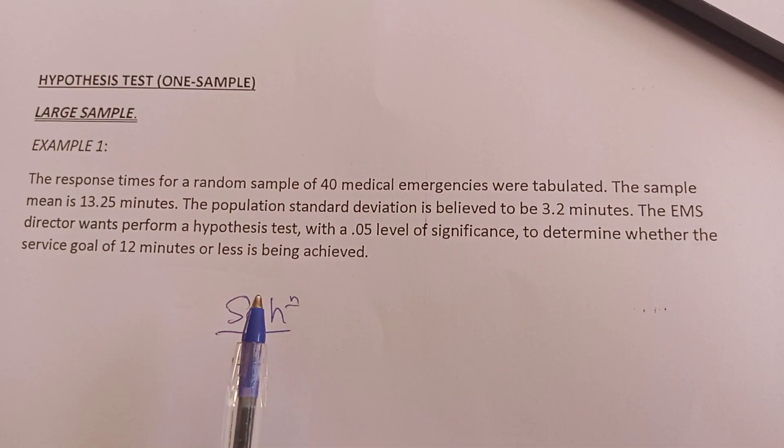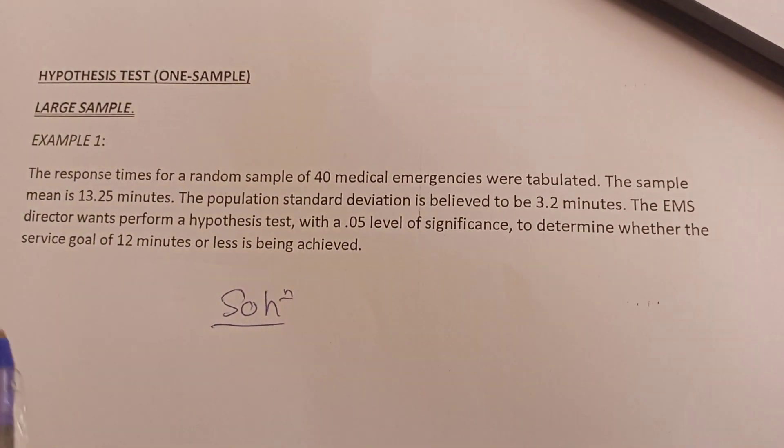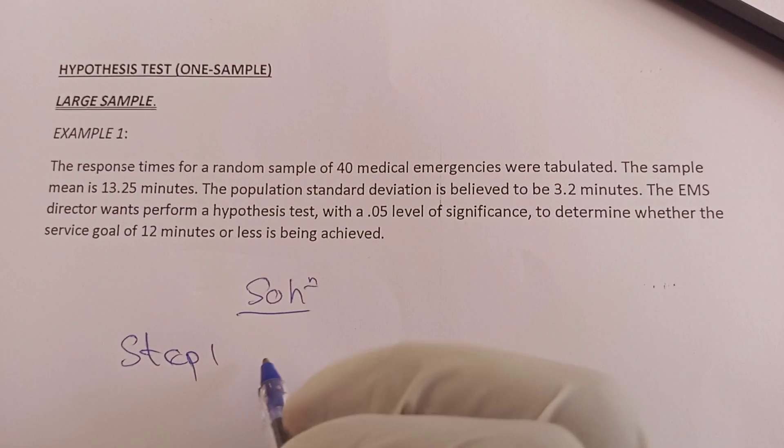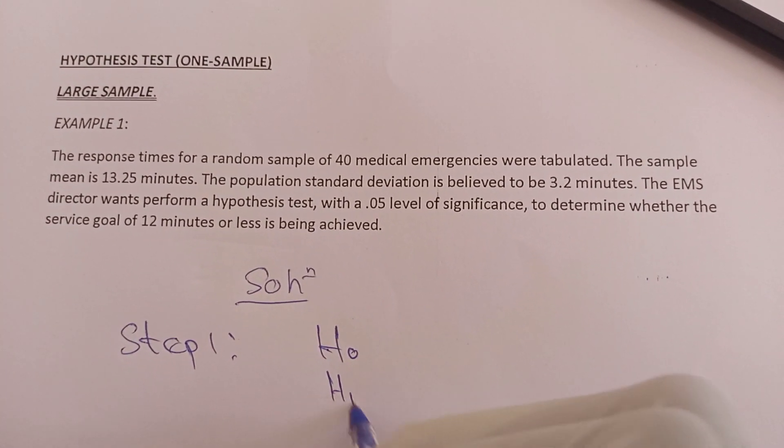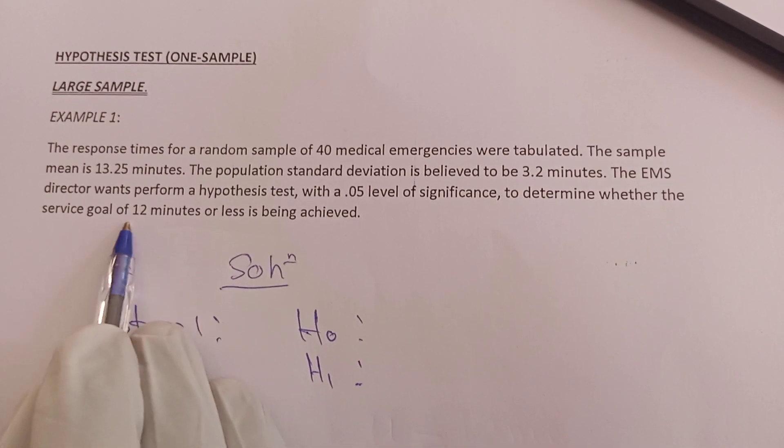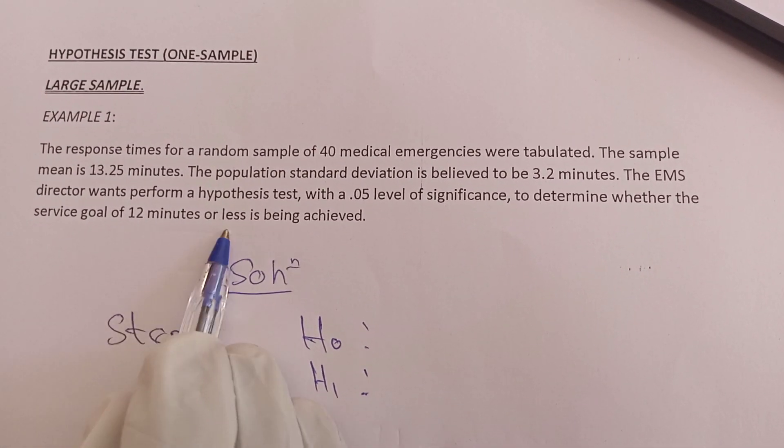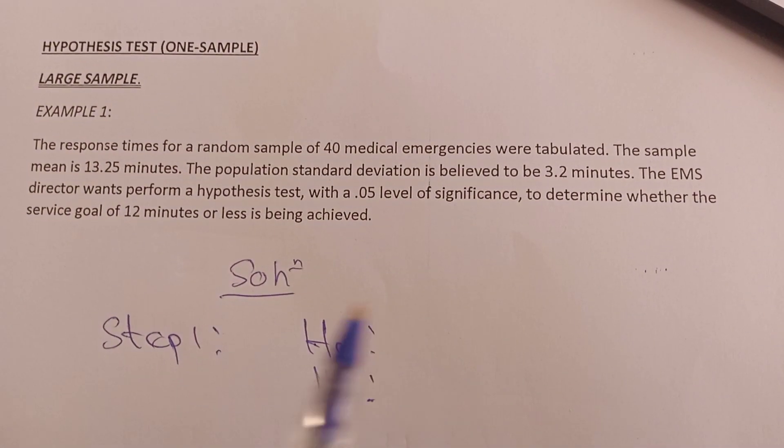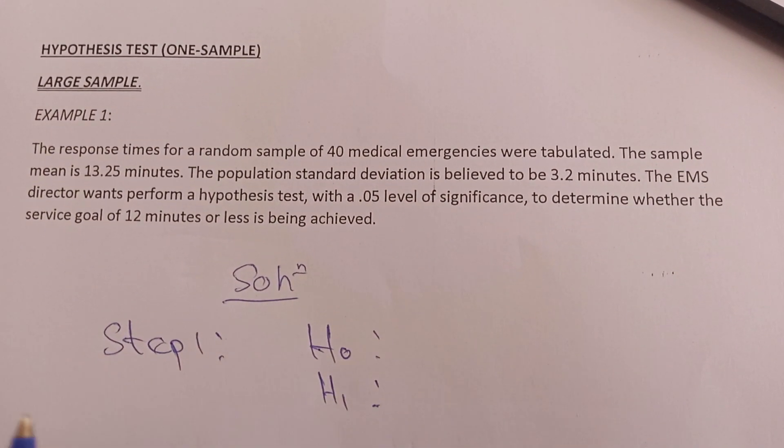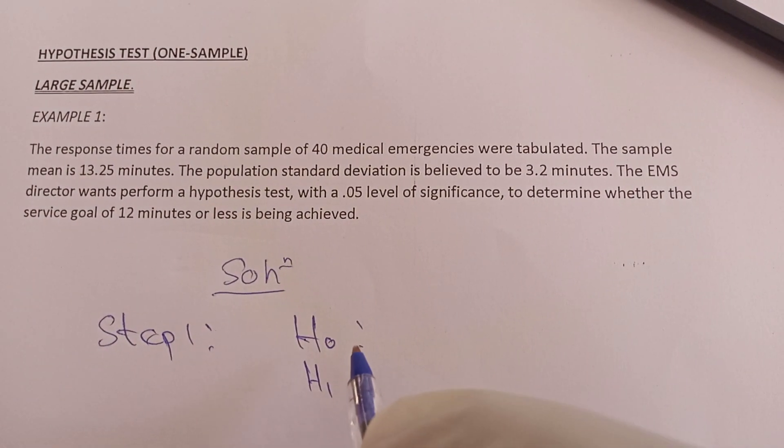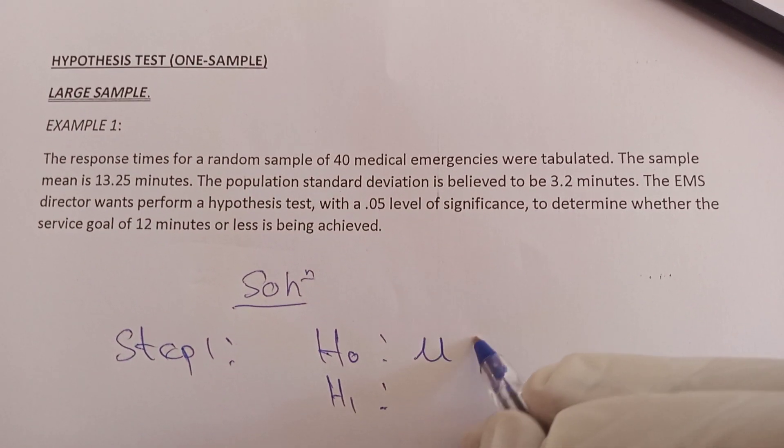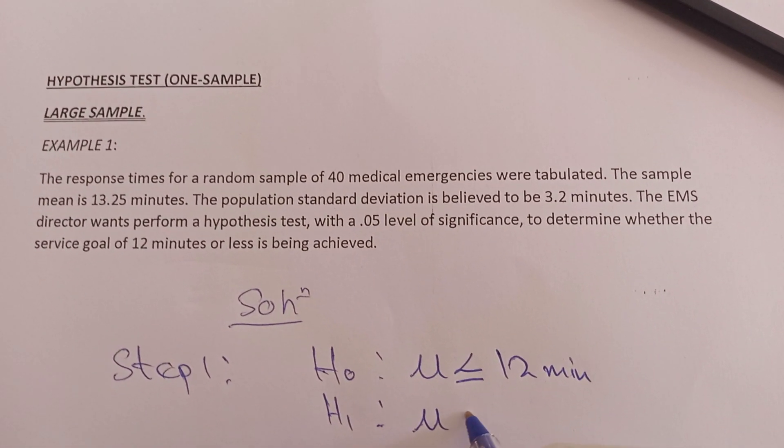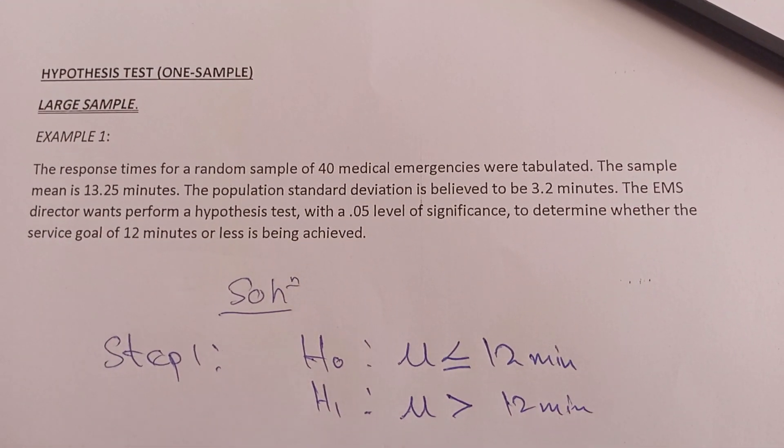First, we want to state the null and the alternate hypothesis. When you look at this, they said 12 minutes or less. Whenever you have 12 minutes or less, it means less than or equal to 12, and less than or equal to usually goes for the null hypothesis. So the null hypothesis is the mean is less than or equal to 12 minutes. The opposite is the alternative hypothesis: the mean is greater than 12 minutes.